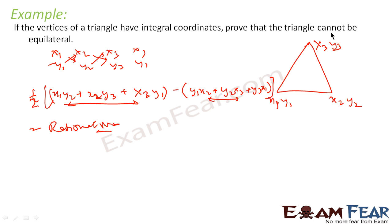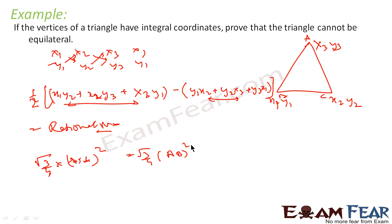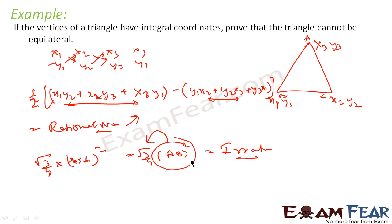But we know that the area of an equilateral triangle is (√3/4) × side². Now, side² = (x2−x1)² + (y2−y1)², which is rational. But rational times irrational (√3) is irrational. So the area of an equilateral triangle must be irrational. We said the area from integral coordinates is rational, but equilateral area is irrational — contradiction. Therefore, a triangle with integral coordinates cannot be equilateral.